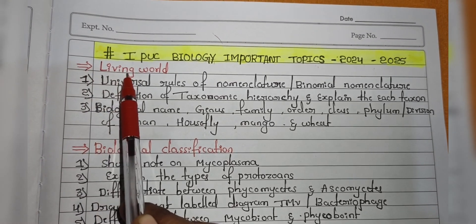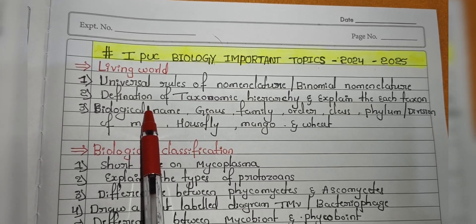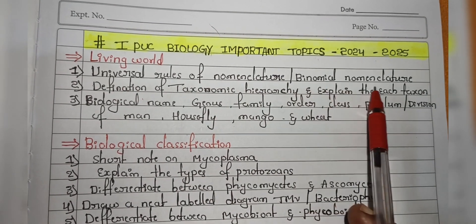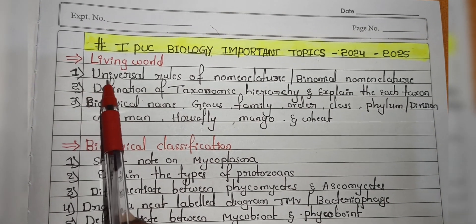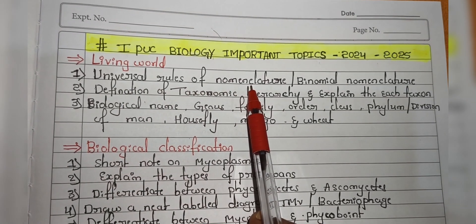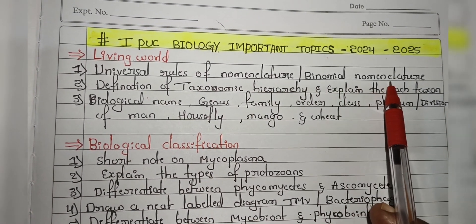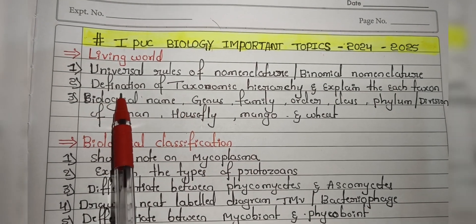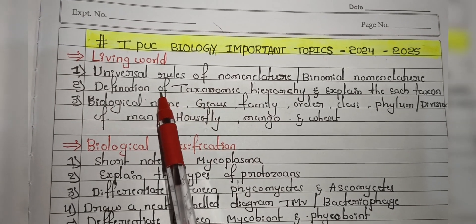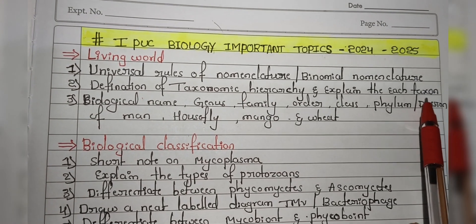First chapter is the Living World. From the Living World, questions will arise on three main topics. First topic is binomial nomenclature — they will ask questions on universal rules of nomenclature or directly on binomial nomenclature. Second, they will ask questions on taxonomic hierarchy, including the definition of taxonomic hierarchy and an explanation of each taxon.